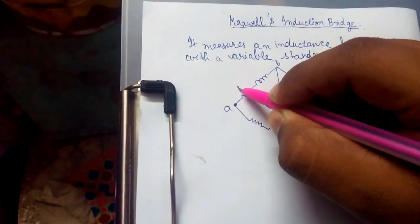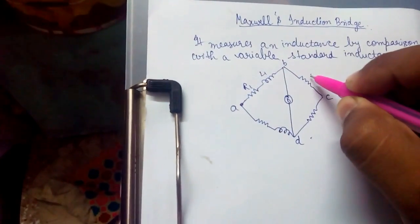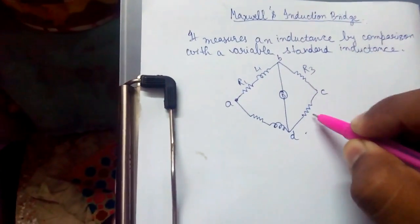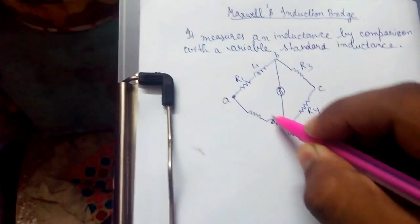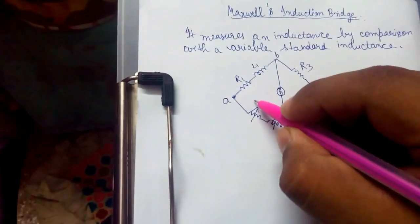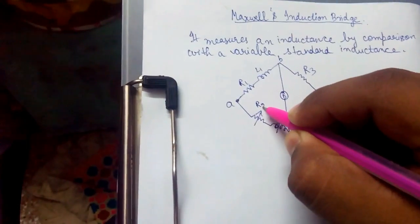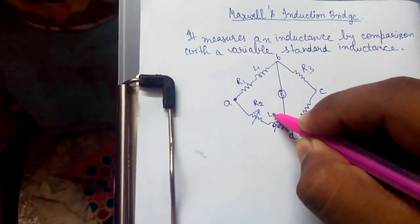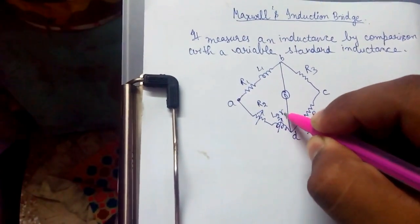This would be R1L1. This would be R3. This would be R4. These are variable resistance and inductance. This would be R2. This would be L2R2.